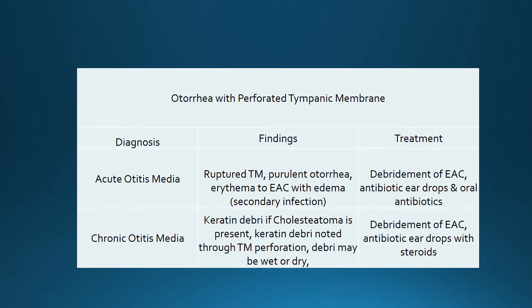Acute otitis media sometimes will be accompanied with a ruptured tympanic membrane. The patient may then experience purulent otorrhea that can cause a secondary infection to the external canal. This of course would be treated with oral antibiotics as well as antibiotic ear drops containing a steroid and insertion of a wick.